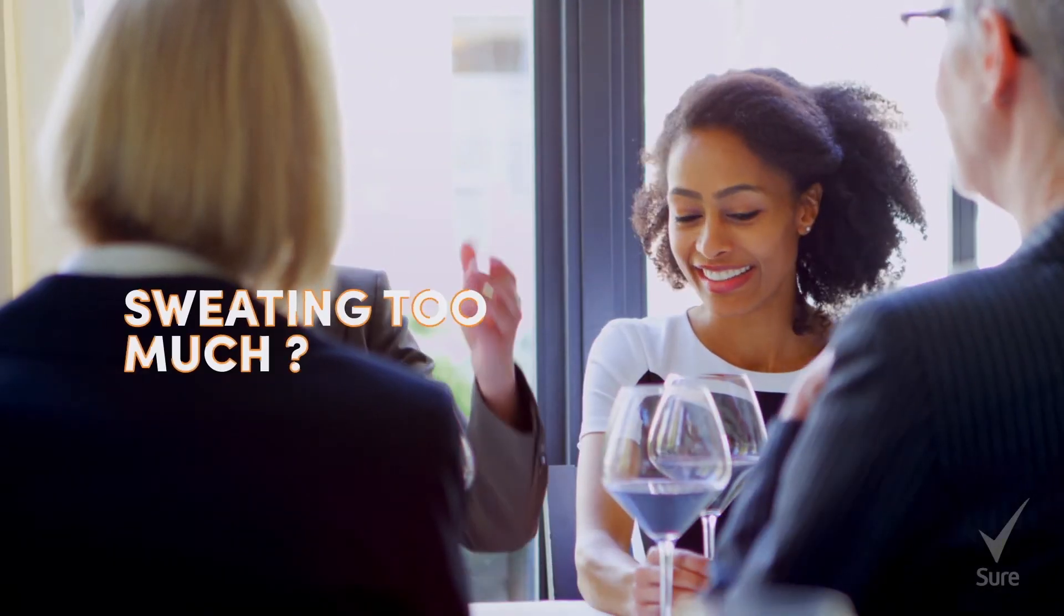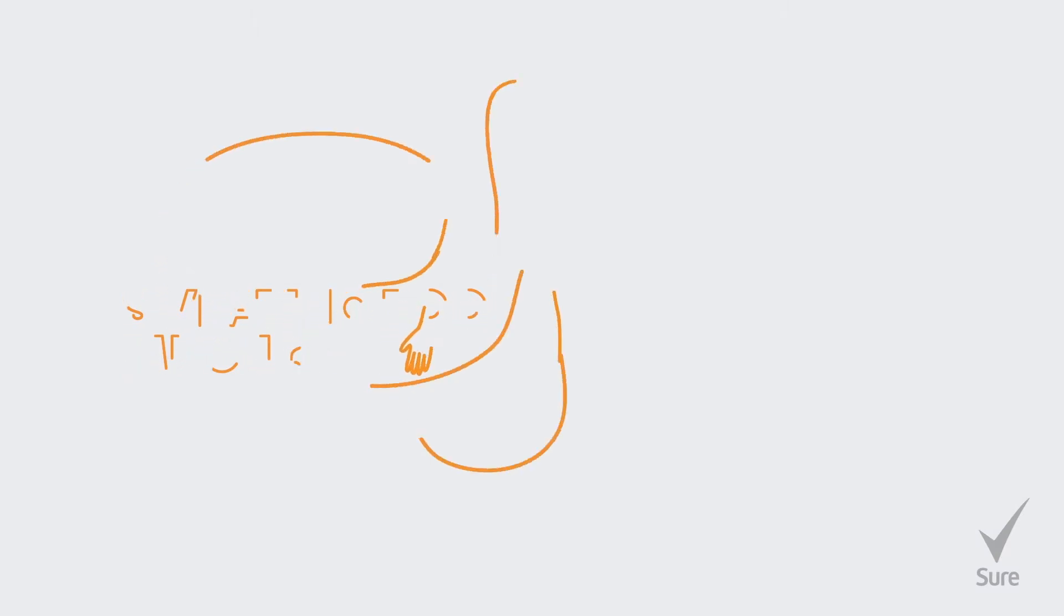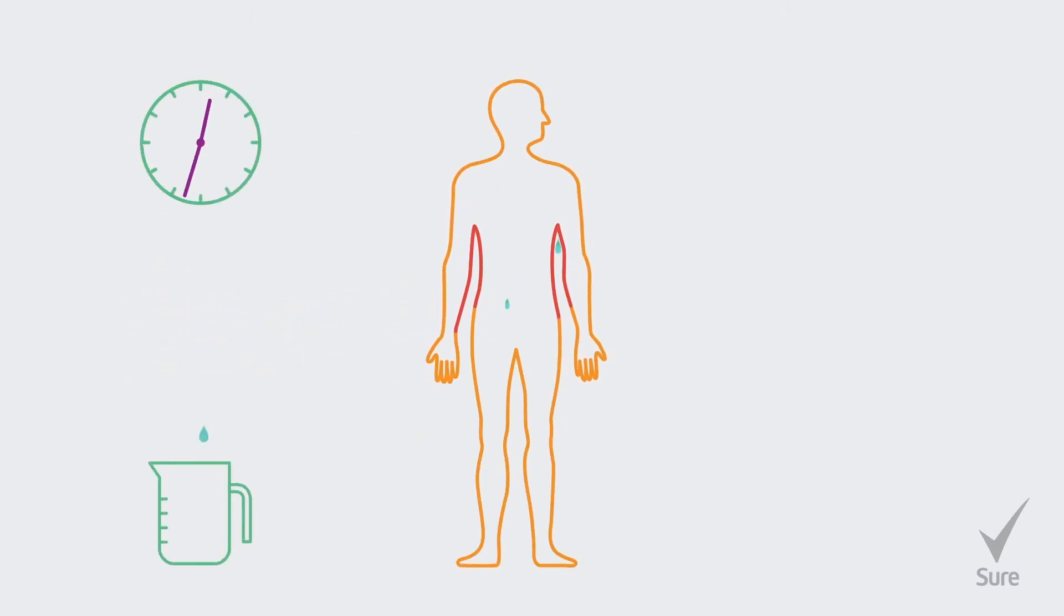Most people would be surprised to learn how much they sweat. On average, we produce about 1 liter of sweat every day. That sounds like a lot, but most of it evaporates from our skin so we don't notice it.